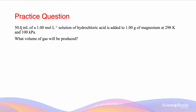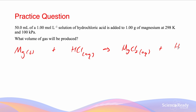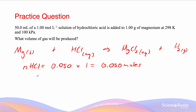For this reaction, a 50 mL solution of 1 mol/L hydrochloric acid reacts with 1 gram of magnesium at 298 K and 100 kPa. The question asks what volume of gas is produced. The equation is: Mg(s) + 2HCl(aq) → MgCl2 + H2(g). N of HCl = 0.050 L × 1 mol/L = 0.050 moles. N of Mg = 1 / 24.31 = 0.0411 moles.